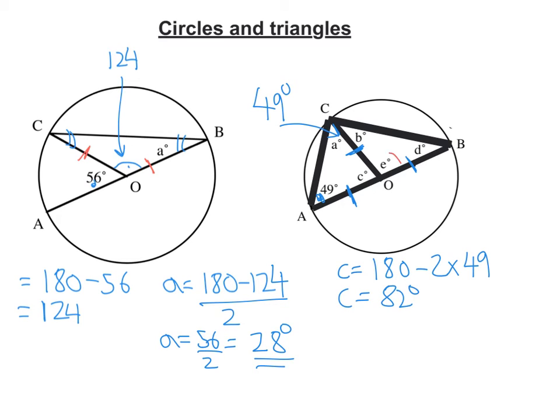Once I know C, I can work out what E is, because C plus E is 180. So E is going to be 180 minus 82, which gives me 98.